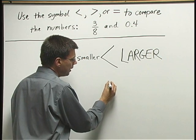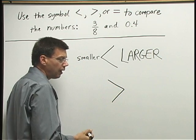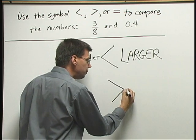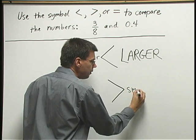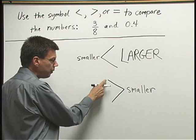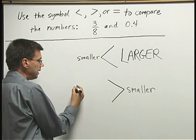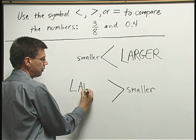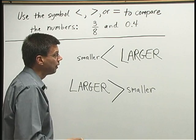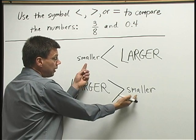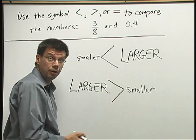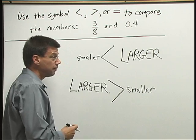If I wrote down this symbol, again, the point, the small end of the symbol, should be next to the smaller number. But the wide-open end at this side should be next to the larger. The most important thing is that you get the smaller number next to the point and the larger number next to the wide-open end of the symbol.